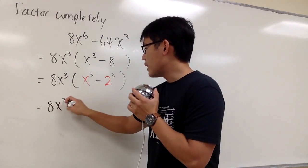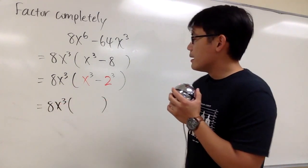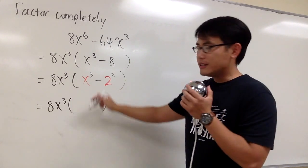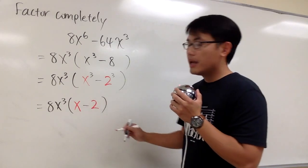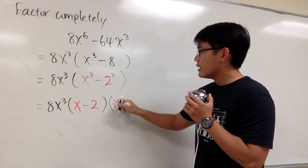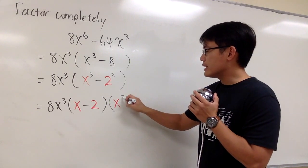This is just 8x to the 3rd power, stays the same. And to factor this out, we'll first get x minus 2. And then we will have x, this first term to a 2nd power.